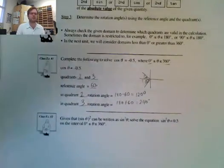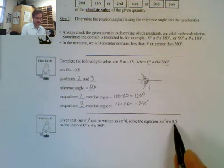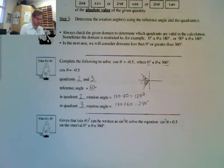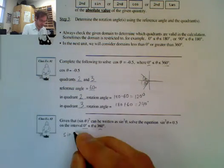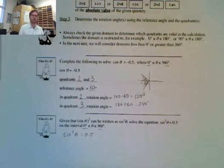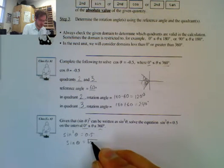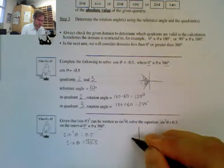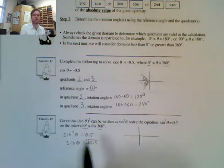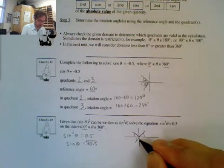For question number 2, it says given that sine theta squared can be written as sine squared theta, solve the equation where sine squared theta equals 0.5, looking again in degrees between 0 and 360. First, I want to figure out which quadrant it's in. Since sine squared theta equals 0.5, I take the square root: sine theta equals the square root of 0.5. Now we could have either a positive or negative value there, so sine could be both positive or negative.